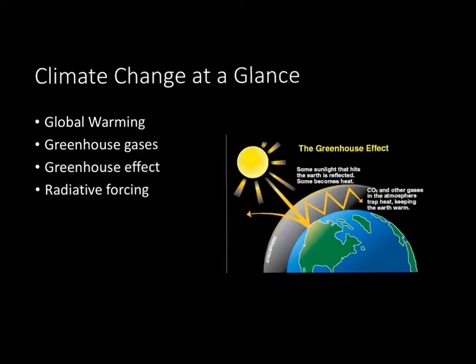Greenhouse gases — a term you've heard many times in environmental science. A greenhouse gas is basically any atmospheric gas with three or more atoms, such as CO2, N2O, CH4, even CFCs, etc. There's something known as the greenhouse effect, which you can see in this visual here. These gases absorb infrared radiation in the atmosphere, then re-emit some of that radiation back out, which warms up the troposphere.